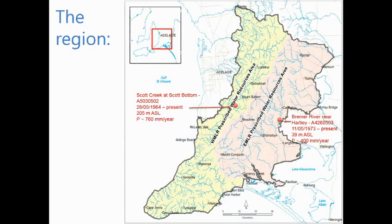That's the region I'll be talking about today, familiar to you all — the western and the eastern Mount Lofty Ranges. There's a separate water allocation plan for each. The two sites from which the data I use today are from those particular ones, basically from a wet side and a dry side — the rainfall is almost twice the level at the site in the east.